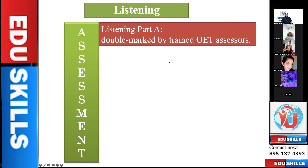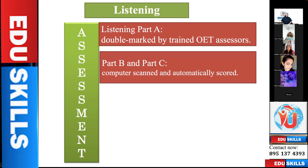How do they assess? Listening Part A is double marked by trained OET assessors. OET, IELTS, TOEFL, PTE — all these are known as double benchmarked exams. Two independent assessors, examiners, will be assessing your paper in the first run itself. They may not have any connection with each other and may not know who is going to value the paper again — in the sense, it will be valued twice. Part B and Part C are computer scanned and automatically scored.